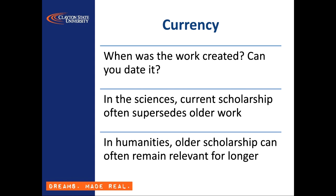The question of currency addresses whether the information presented in the source remains as relevant now as when it was written. In some subjects, such as the sciences and engineering, new findings can render older scholarship obsolete. In the humanities, work tends to build upon prior scholarship in a way that doesn't invalidate the older work, although new outlooks and previously unconsidered perspectives may cast a different light on the scholarship of the past. With this in mind, look for when the source was created so that you can place it appropriately in its historical context and understand how a current interpretation might be different.